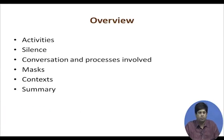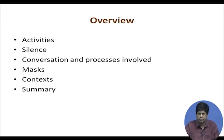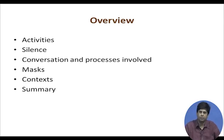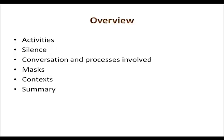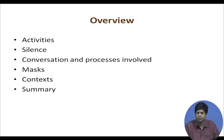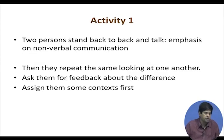What I would like to do is start off by outlining the various things we are going to do together. We will talk about a series of activities — at least three different activities. We will talk a little about silence, the details of the processes involved in conversation, different kinds of masks that we wear when we interact with people, contexts, and then we will sum up.